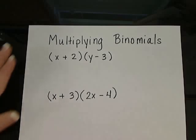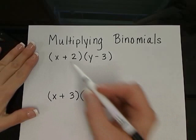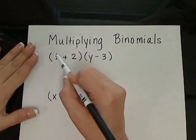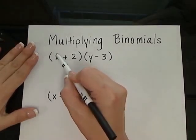When multiplying binomials, we're going to use the distributive property. This means that we're going to distribute each term from the first parentheses to the second parentheses.